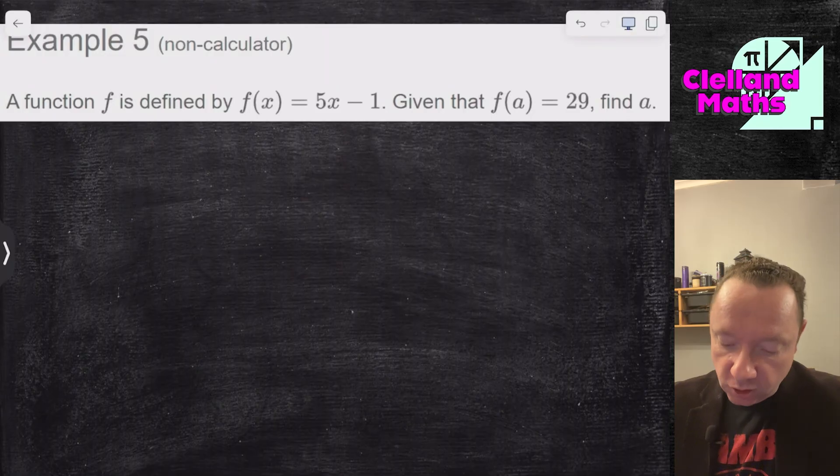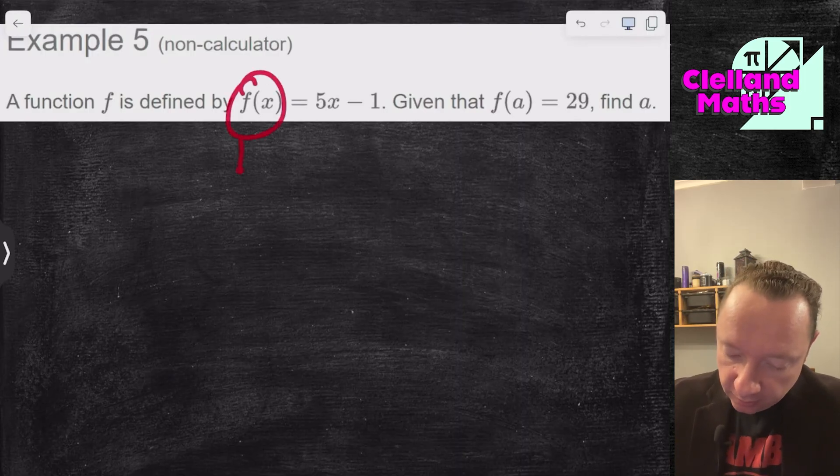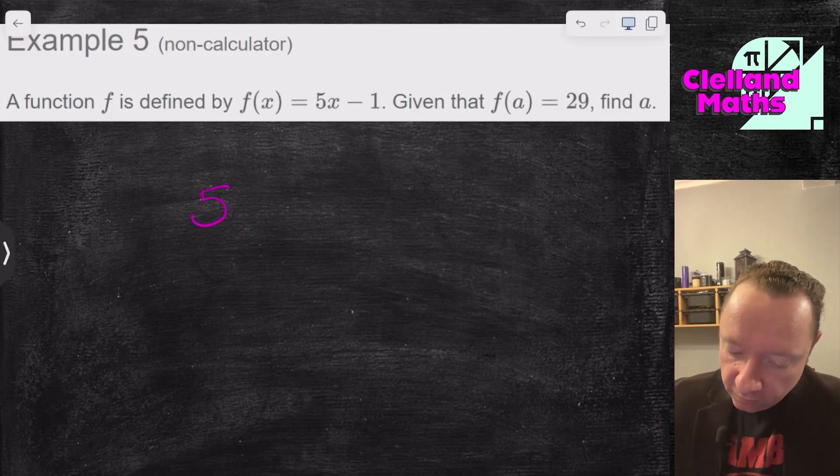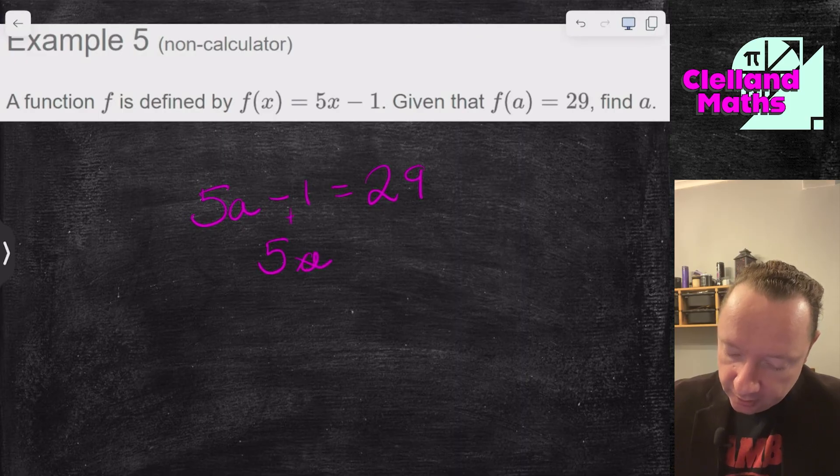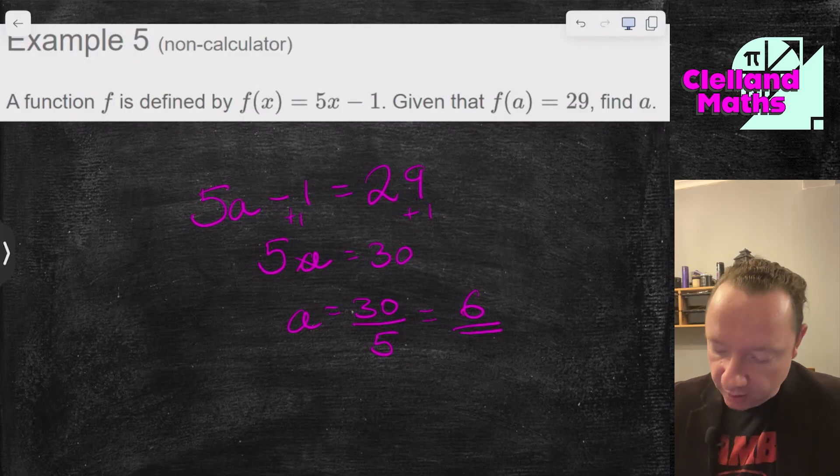Example 5. Function is defined as f of x equals 5x minus 1. Given that f of a equals 29, find a. Now this is the other type where we're telling you that this function equals 29. So 5a minus 1 equals 29. Solving an equation, add 1 to both sides. That's 30. And then divide by 5. 30 over 5 which is 6. a is 6. You can check that, of course. 5 times 6 is 30. Minus 1 is 29.